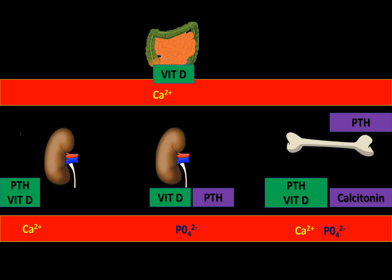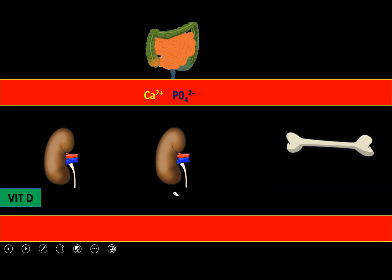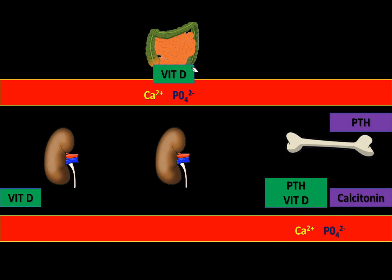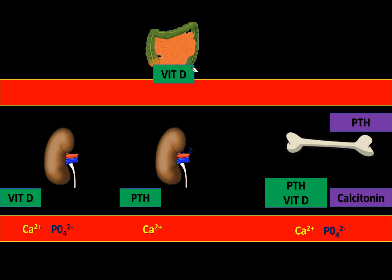The net result is that calcium levels in the blood are elevated by both vitamin D and parathyroid hormone, whereas phosphate levels are elevated by vitamin D but decreased by parathyroid hormone. In summary, both calcium and phosphate are absorbed into circulation by vitamin D, then deposited into bone, a process inhibited by parathyroid hormone, which instead drives calcium back into blood.